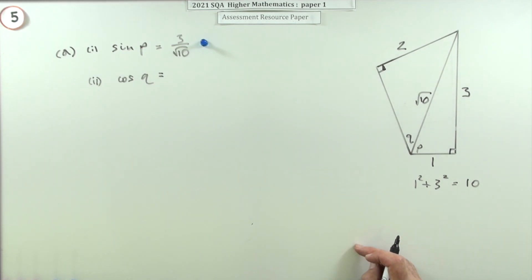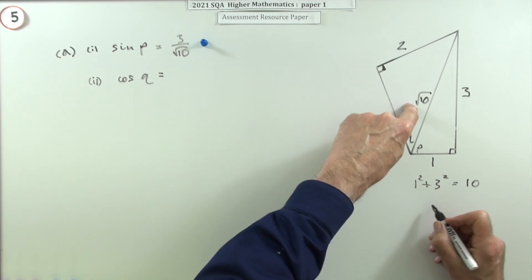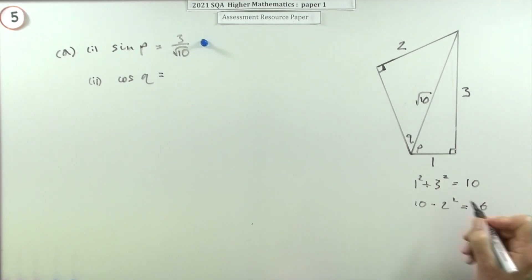So this time it's going to be this squared take away that squared to get this one. So that'll be 10 minus 2², that's 4, so that makes 6. So that's going to be √6. Now √6 gets a mark, and you just pop it into this.